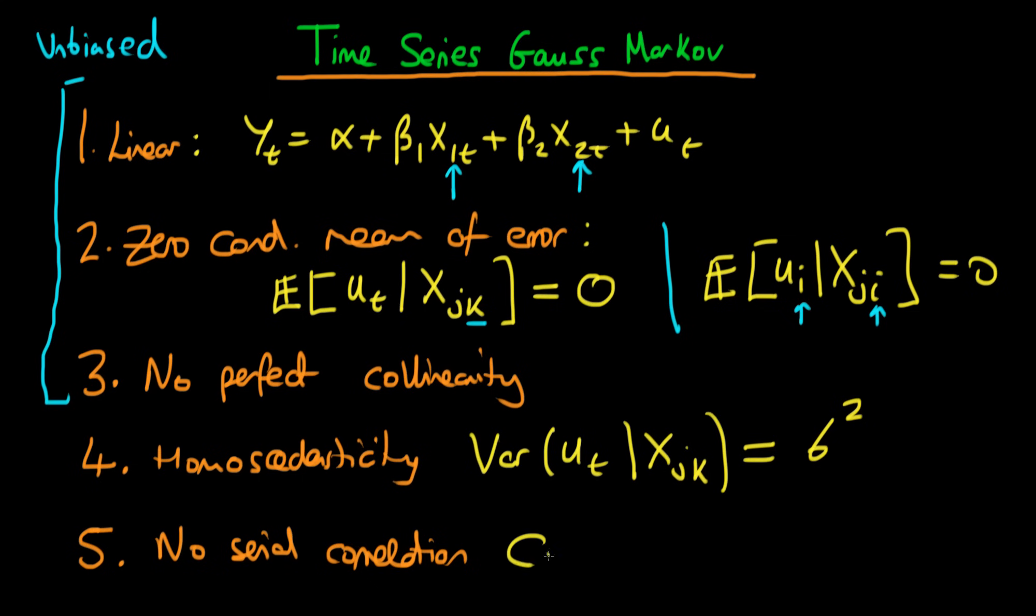So when we state the assumption of no serial correlation in time series data we have to state that the covariance between some error at time t and some error at some other time s conditioned on all observations for all points in time has to be equal to zero. And if each of these Gauss-Markov conditions is satisfied then as the Gauss-Markov theorem suggests OLS is BLUE so it's the best linear unbiased estimator possible.